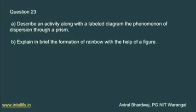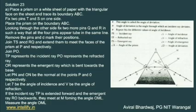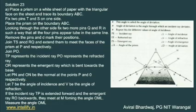Question 23: Describe an activity along with a labelled diagram for the phenomenon of dispersion of light through a prism — this is also an important question. Explain briefly the formation of a rainbow with the help of a figure. The activity involves placing a prism on a white sheet, passing white light through it; the angle of incidence and angle of reflection produce seven colors — the basic principle of rainbow colors. Follow the step-by-step process: place the prism on boundary ABC, passing through the line to the angle of reflection, angle of incidence, and angle of deviation.